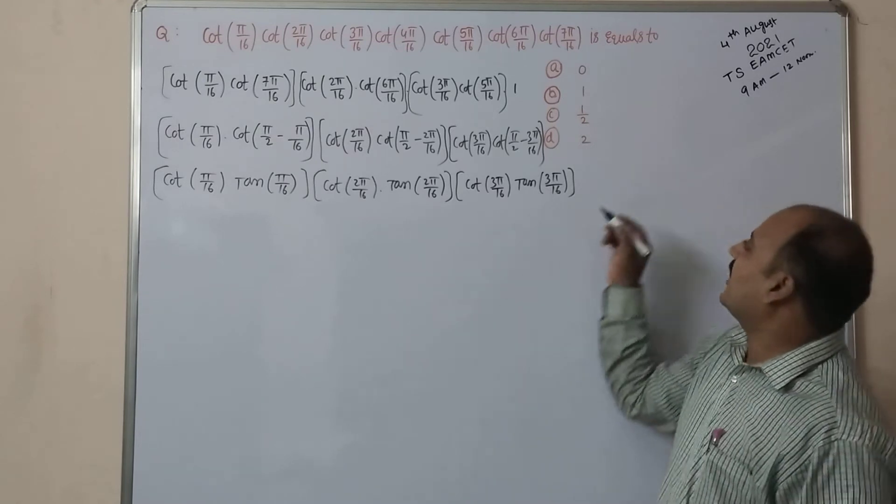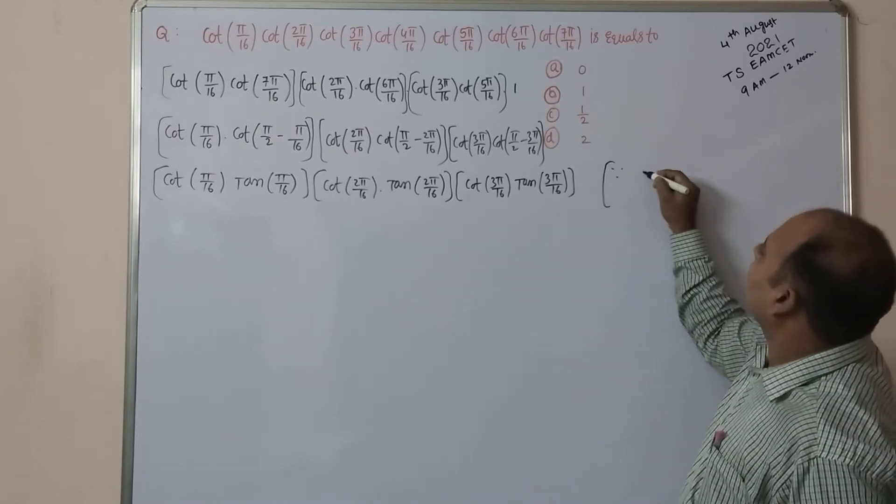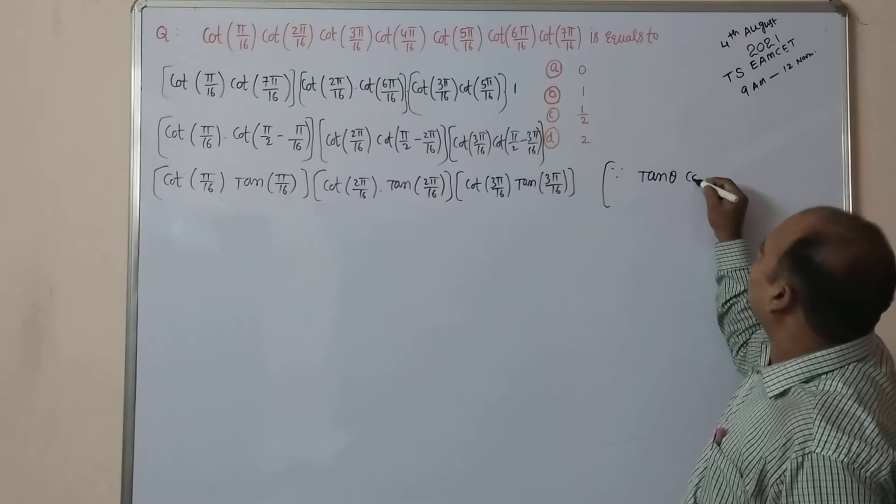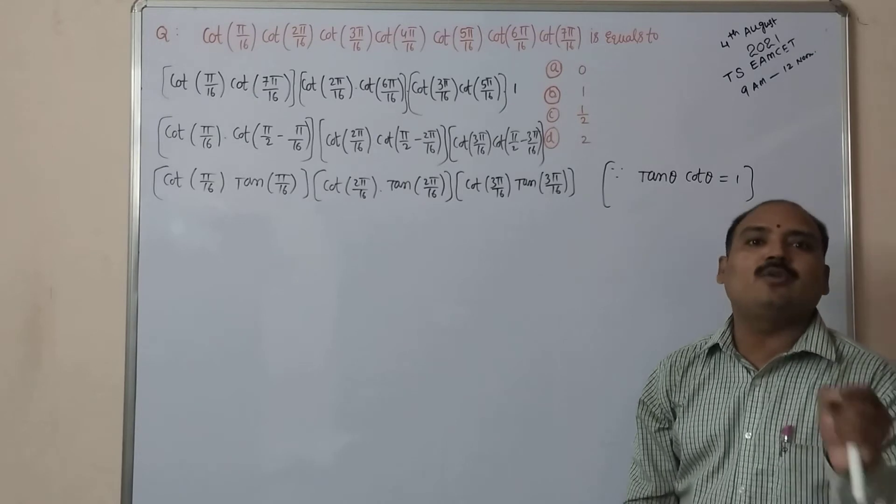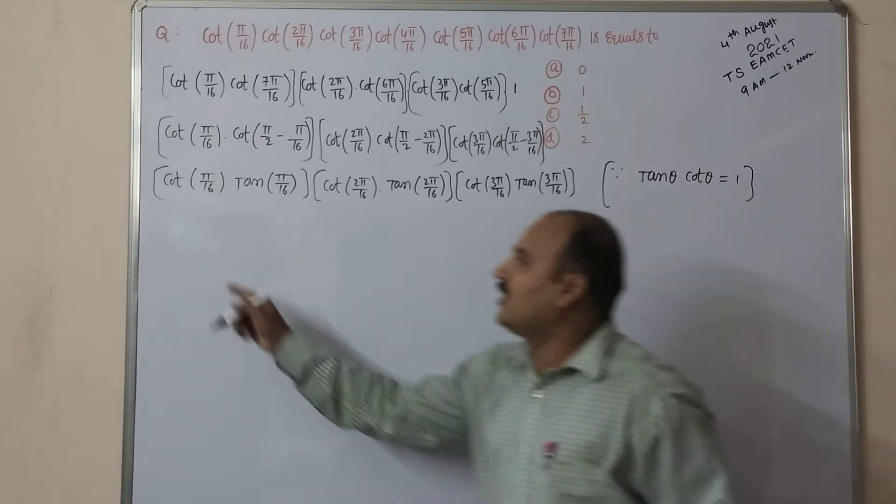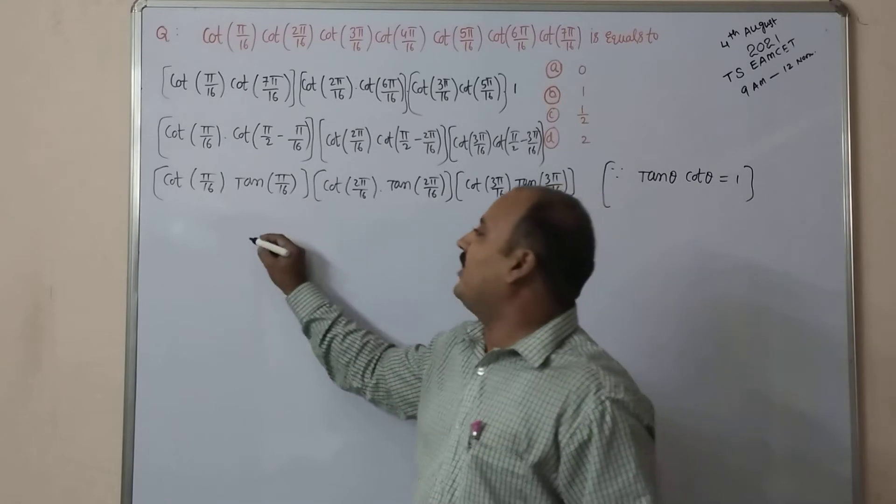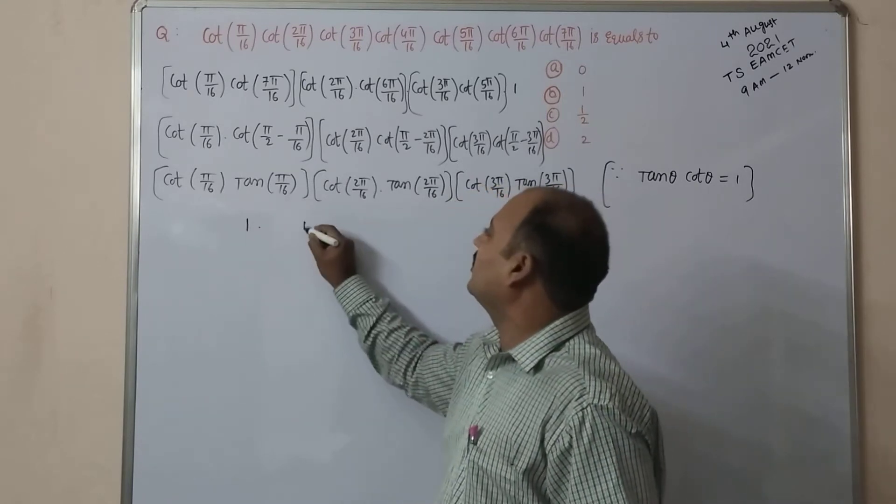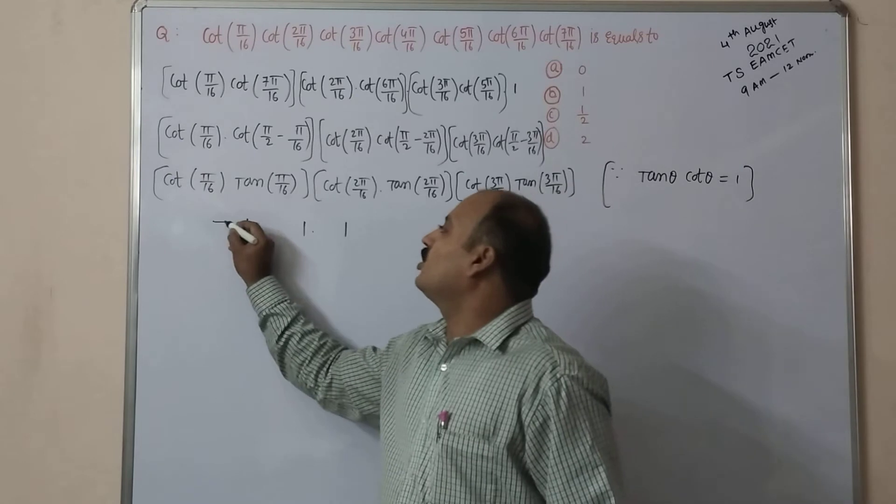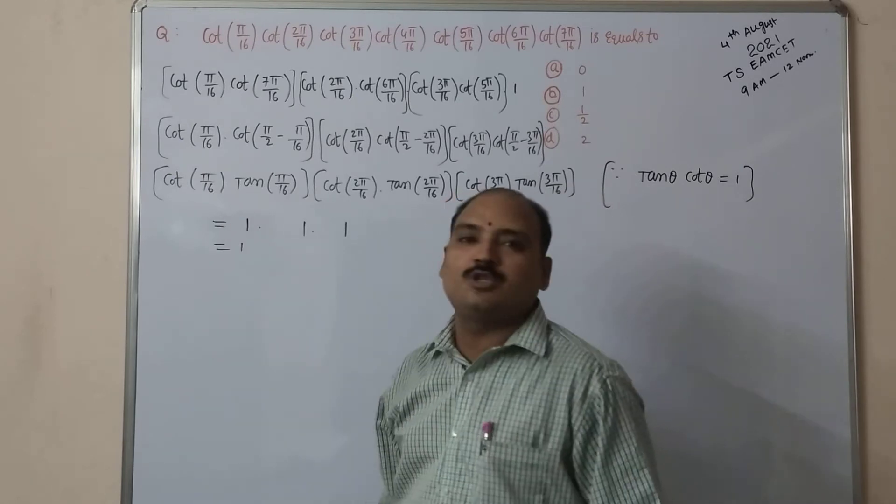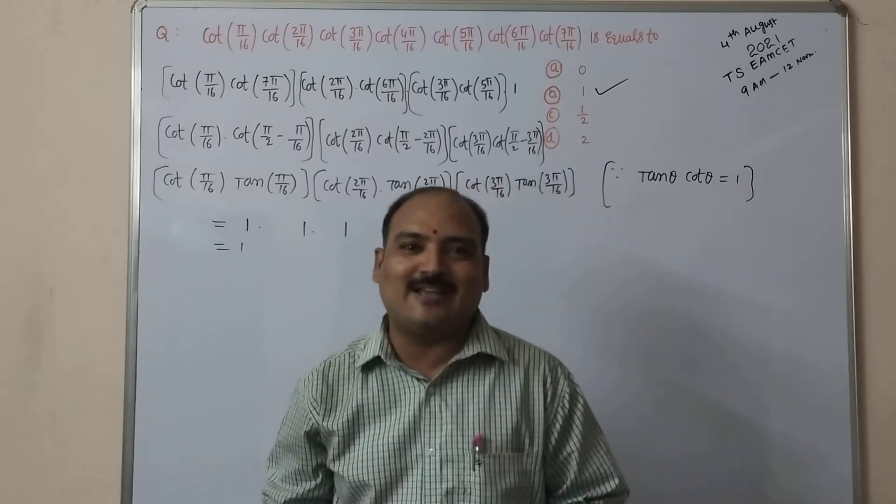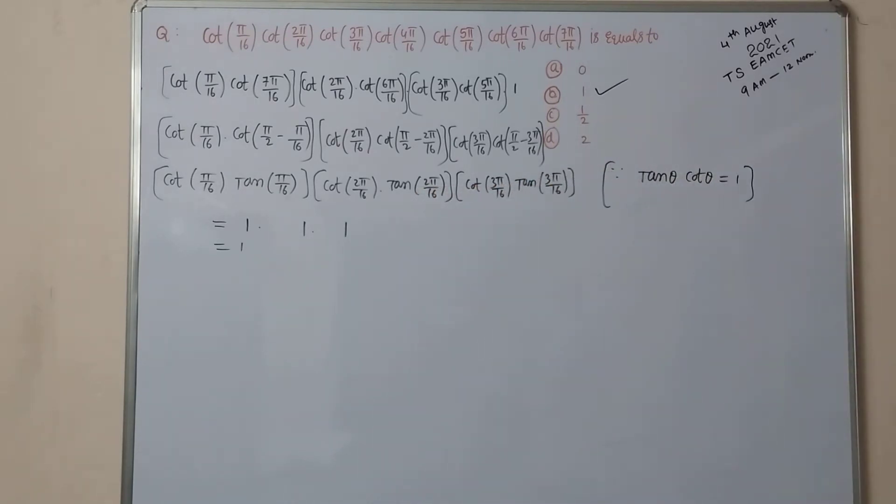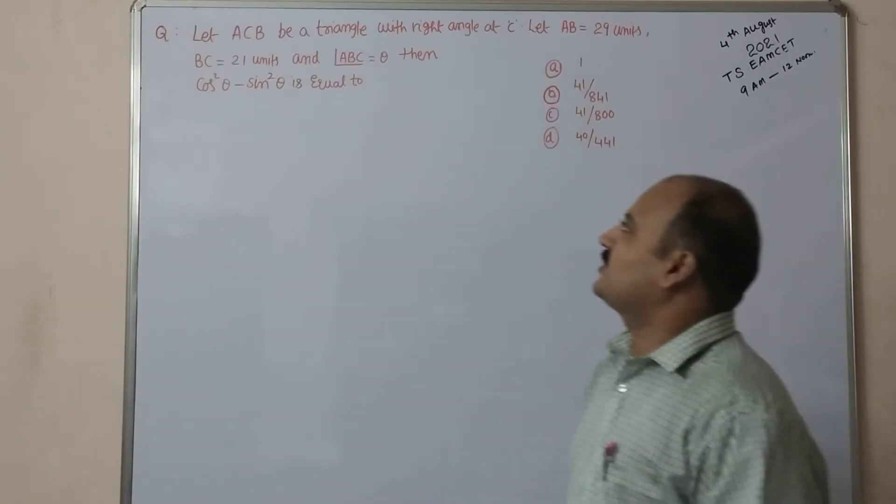We know that one of the standard results, tan theta into cot theta is equal to 1. Tan theta into cot theta is always equal to 1. Observe this: cot(π/16) into tan(π/16) is 1, this value is also 1, this value is also 1. So the product of these values are equal to 1, it is there in the set option C. We will move on to the next question.